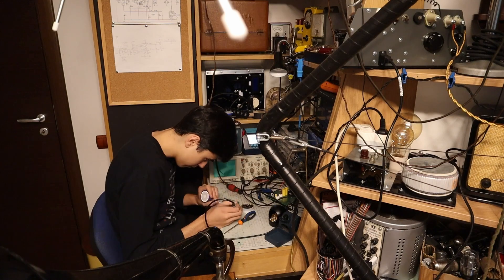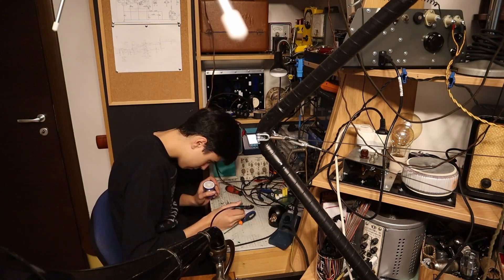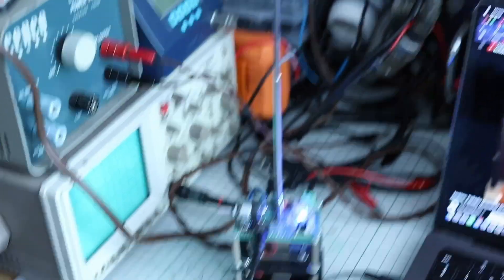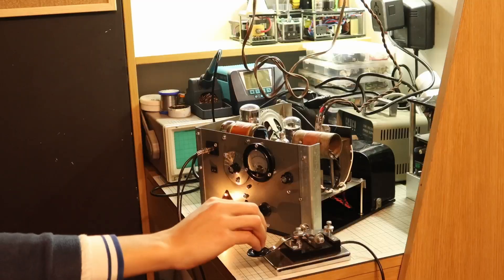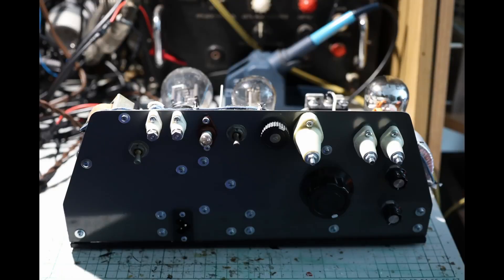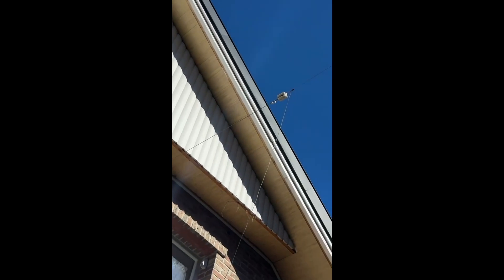By 11th grade, I became fascinated by electromagnetism and high frequencies, so I started tinkering with radio electronics. I built an FM transmitter, an AM tube transmitter, two AM tube radios, and a crystal radio with a 20-meter long antenna.